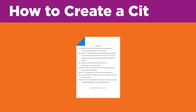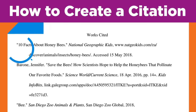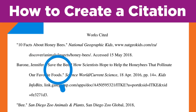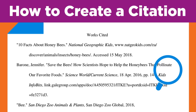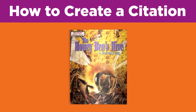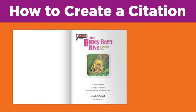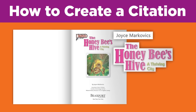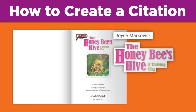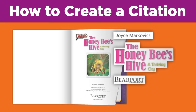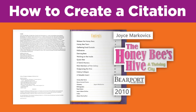So now that you know you need to cite your sources, let's find out how to do it. To cite means to identify the sources you used in your work — basically, you write down the details that will help someone else find the source. For example, if you're using the book The Honey Bee's Hive, you'll need to record the following details from the title page and the verso or back of the title page: the author, Joyce Markovics; the complete title, The Honey Bee's Hive: A Thriving City; the publisher, Bearport Publishing; and the publication date, 2010.